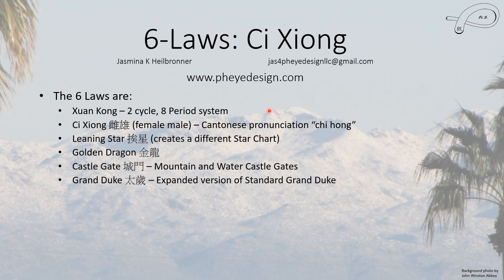The Six Laws are a system that is different than the Sanyuan and different than the Sanher. You can look at the Sanher of your house and the Sanyuan analysis too — they don't negate each other, and this doesn't really either. However, if you find a person who is a real Six Laws adherent, they're going to say the Six Laws is right and Flying Stars is wrong. I don't believe that; I think they can work together.